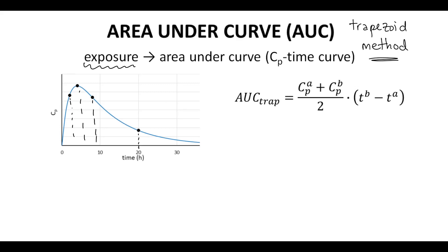Pick two adjacent data points, average the two CP values, and then multiply the average by the time difference between the points.